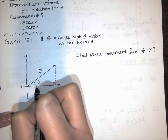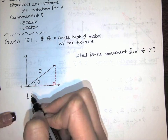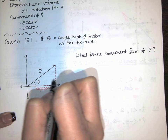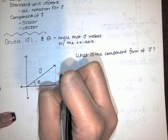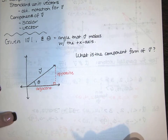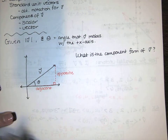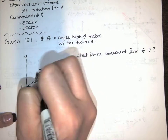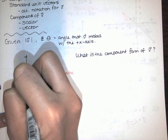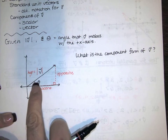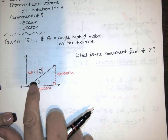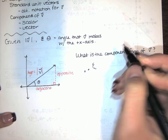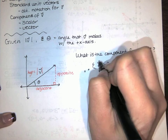From trig, if that's theta, this is the side next to theta but not the hypotenuse — that's called the adjacent side of the triangle. And this side of the triangle is opposite theta; it's directly across from theta, so we say it's opposite theta. If I know the length of v and I know theta, what do the adjacent and opposite sides have to be? The length of v is known, and that's the hypotenuse. If I know the hypotenuse and I know theta and I want the adjacent or opposite side, I can use sine and cosine.